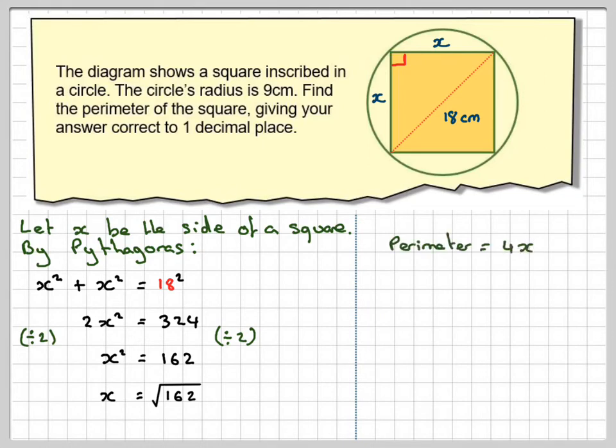So the perimeter will be 4 times x. So that will be 4 times my answer square root of 162. Now I can work that out on my calculator. We're going to get 50.911 to 1 decimal place. That 1 held no effect on that 9. So we're going to end up with 50.9 centimeters to 1 decimal place.